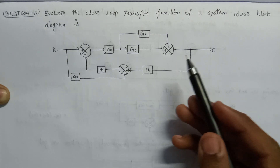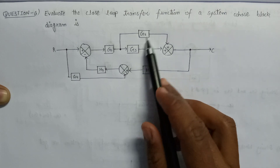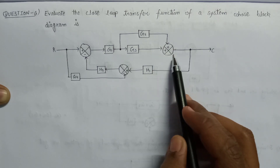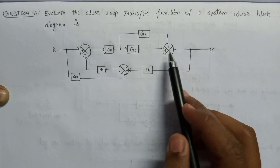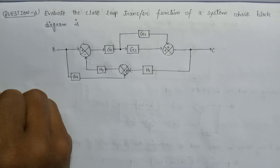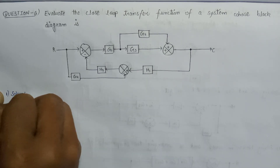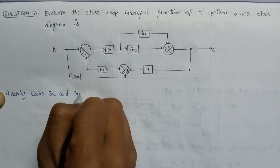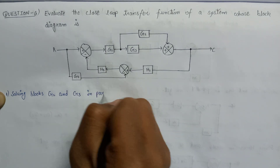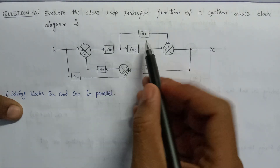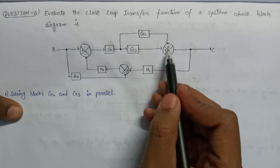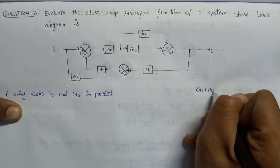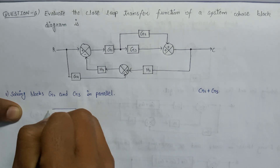Here, the two blocks G2 and G3 are connected in parallel combination by the help of a summer. We can easily initiate our block diagram reduction technique from this point. So our first step is solving blocks G2 and G3 in parallel. Since G2 and G3 are connected in parallel with both positive polarity, their equivalent will now become G2 plus G3.